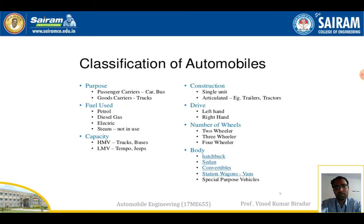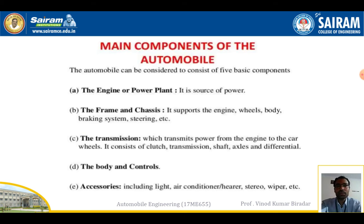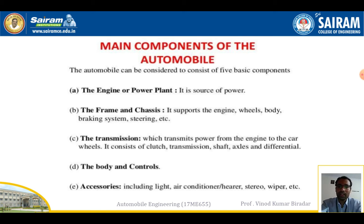Based on body type: hatchbacks, sedans, convertibles, station wagons, vans, and special-purpose vehicles such as school and college buses. Now, the main components of an automobile — the most important component is the engine, which is the power plant. The engine supplies power to the wheels; it is the source of power. The second component is the frame and chassis, which is very important to support the weight. It supports the engine, wheels, body, braking system, and steering system.